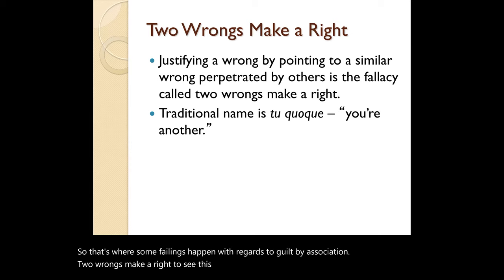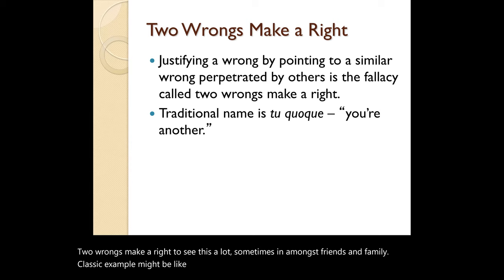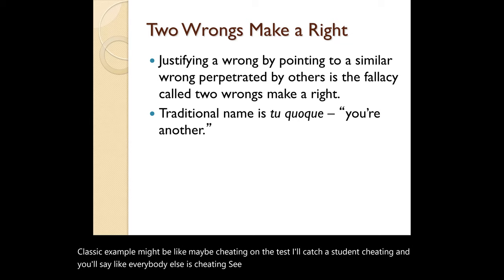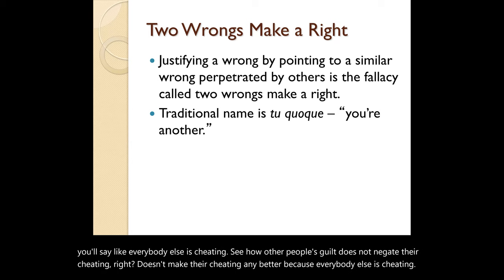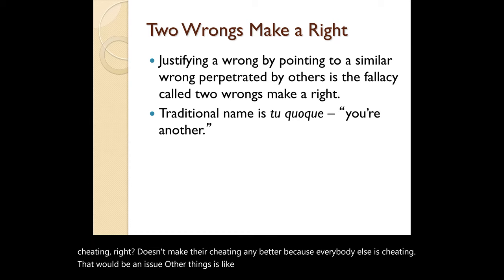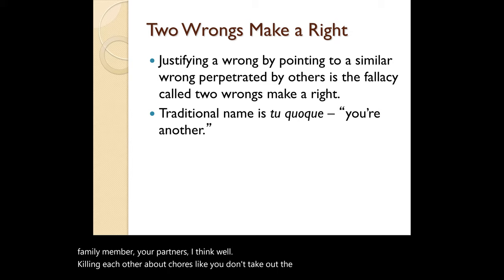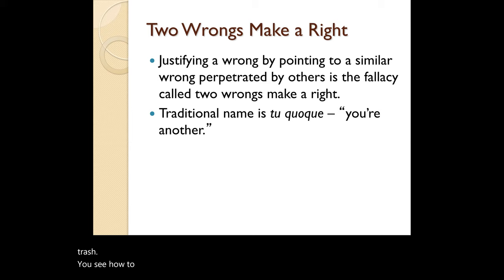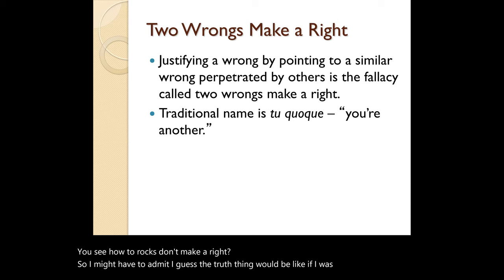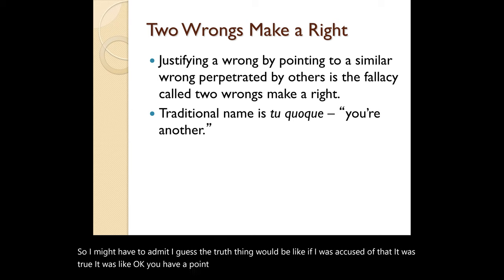Two wrongs make a right is a fallacy you see a lot among friends and family. A classic example: I catch a student cheating and they say, 'Well, everybody else is cheating.' Other people's guilt does not negate their cheating — it doesn't make it any better. Similarly, in a family argument about chores, someone might say 'You don't take out the trash either.' I have to admit, if accused of that and it was true, the right thing would be to say, 'Okay, you have a point. I do need to step up and give more effort.'